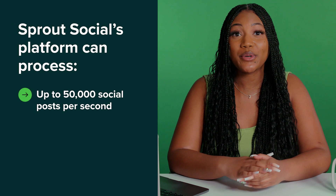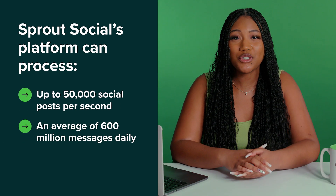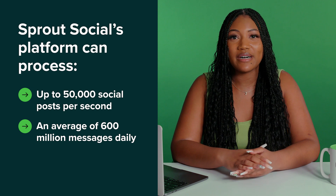You can do sentiment analysis manually, but a tool like Sprout manages large volumes of feedback and deciphers sentiment. Sprout's platform can process up to 50,000 social posts per second and processes an average of 600 million messages daily to monitor positive, negative, and neutral mentions in real time and for extended periods. Plus, you can select the networks you want to monitor and track keywords related to your brand, even if customers don't tag you directly.